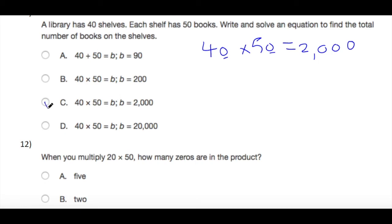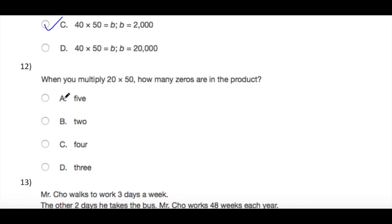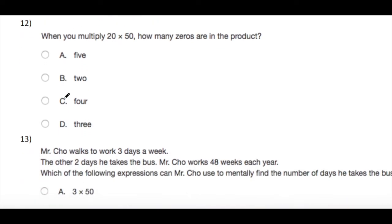Next: when you multiply 20 times 50, how many zeros are in the product? 20 times 50: you have here two zeros already, and 2 times 5 equals 10, so total you have three zeros.